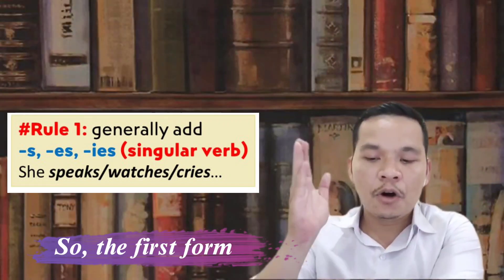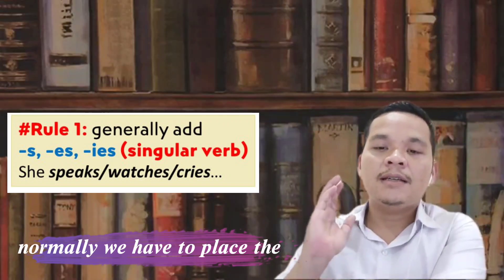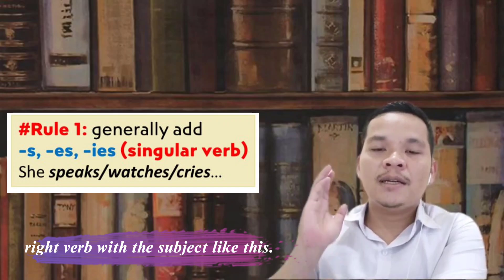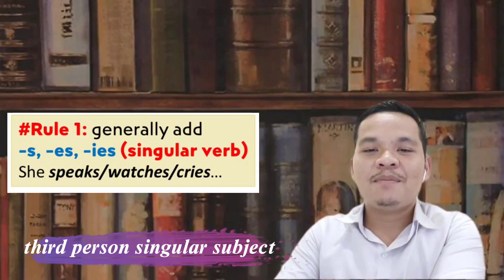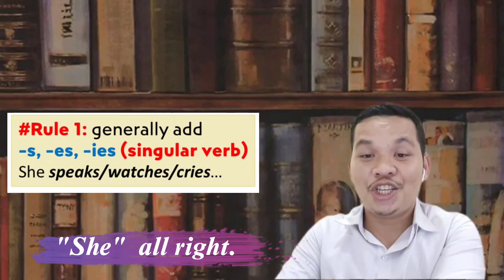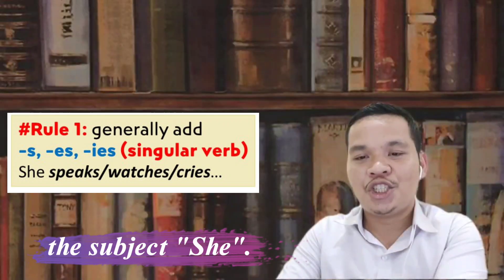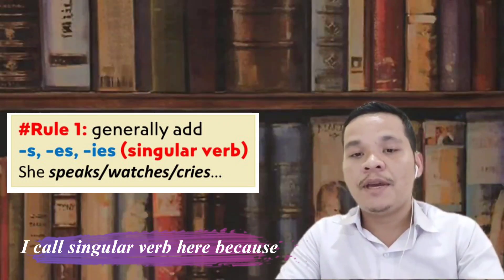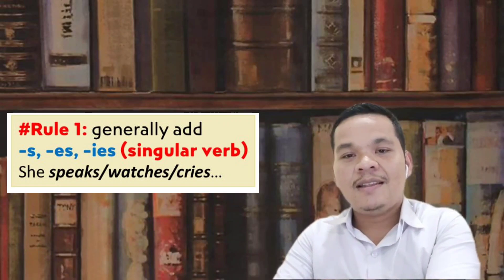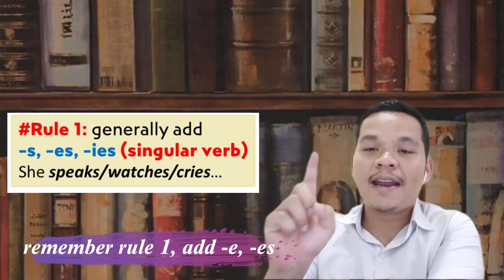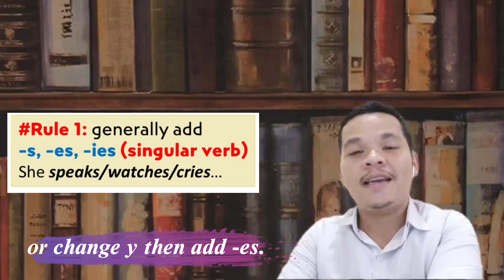So for rule one, we have to place the right verb with the subject. You can see here: the third-person singular subject is 'she,' and the verb is changed to match the subject. I call this a singular verb because we have a third-person singular subject. This is rule one — remember to add S, ES, or change Y then add IES.